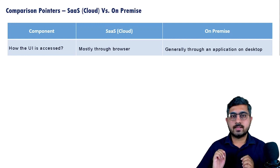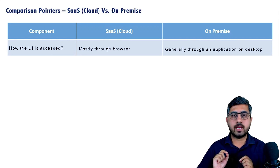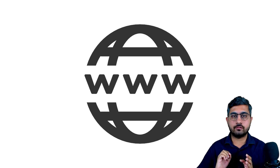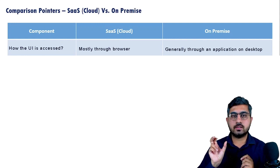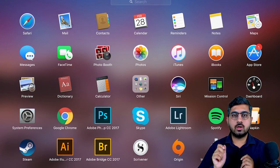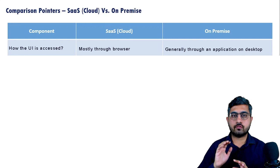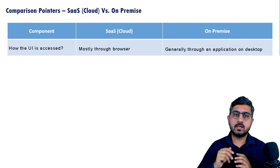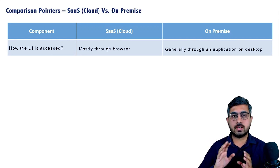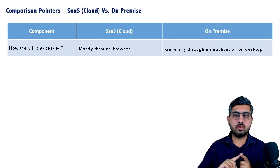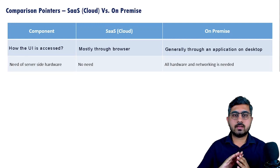Here are certain comparison points between SaaS or cloud-based software and on-premise software. First, how the UI is accessed: in case of a cloud-based software, the user interface is ideally accessed through a web browser. In case of an on-premise application, in many cases there is a certain application that needs to be downloaded on a desktop or device. That said, some on-premise software can also be browser-accessible, though the majority require a locally downloaded application.